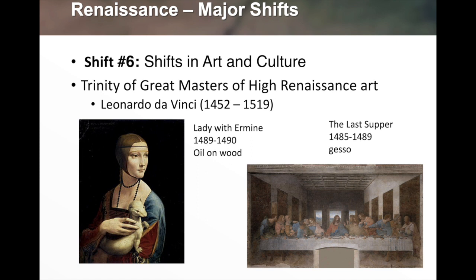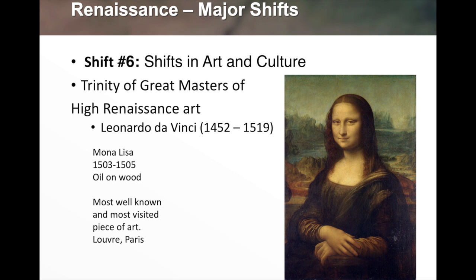On screen are examples of da Vinci's work. 'Lady with an Ermine,' 1489–1490, oil on wood — the detail in the woman's dress, her hand, the muscles in the face of the ermine — is a stark contrast to flat medieval art. The 'Last Supper,' 1485–1489, painted in gesso, is also shown. And the 'Mona Lisa,' 1503–1505, oil on wood — the most well-known and most visited piece of art in history, stored in the Louvre in Paris behind protective glass.